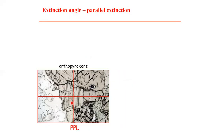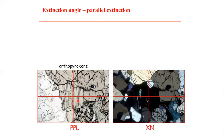Here you can observe the orthopyroxene grain in plane polarized light. You can see lines representing cleavages — in orthopyroxene these cleavages are parallel to the cross hair. After insertion of the upper polarizer, converting plane light to cross light, the grain becomes dark. We have not rotated the stage — we only inserted the upper polarizer. In extinction position the crystallographic features are parallel to the cross hair, and such extinction is termed parallel extinction.